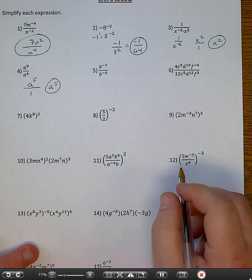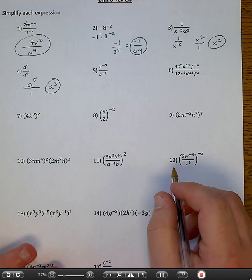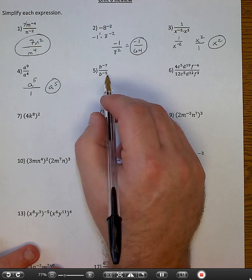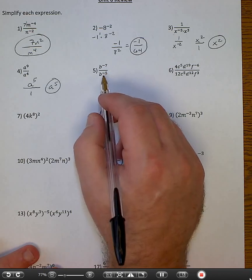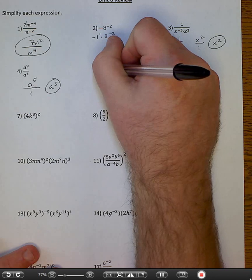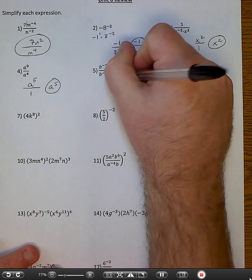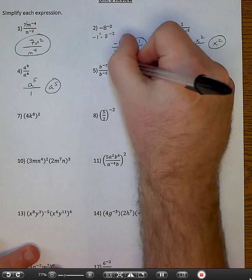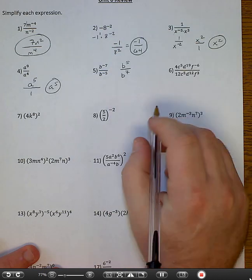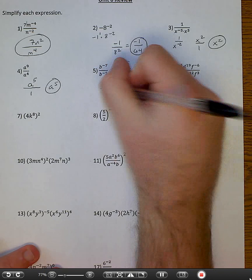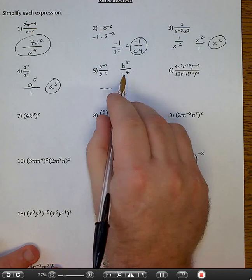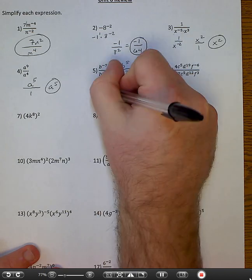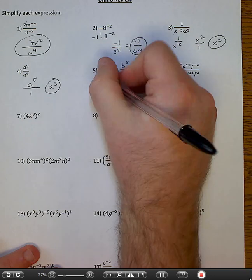Number five. I've got negative exponents. I could subtract — I could say negative seven minus negative five — but a lot of people are going to mess that up. So I'm going to move things around first. I'm going to move negative seven to the bottom; it becomes b to the seventh. I'm going to put b to the negative fifth on top; it becomes b to the fifth. Now where are there more b's? There are more b's on the bottom — two more. So it's going to be b squared on the bottom. Nothing left on top, so I'm going to put a one.